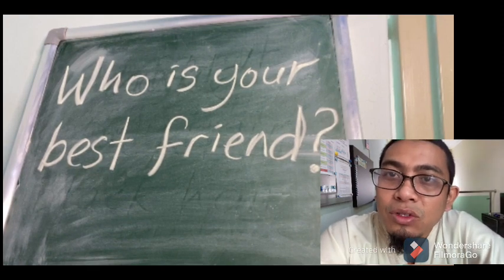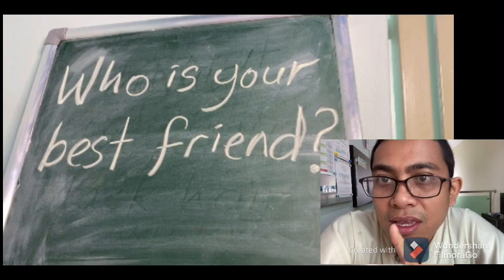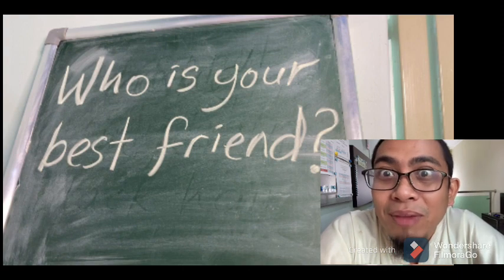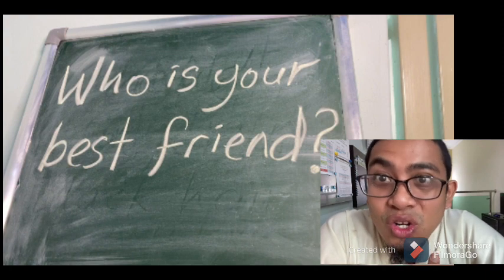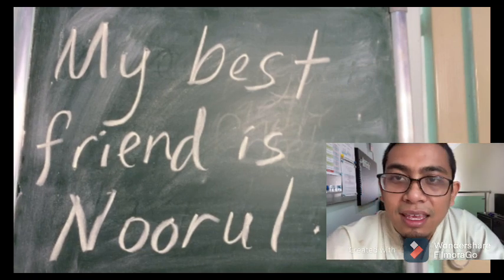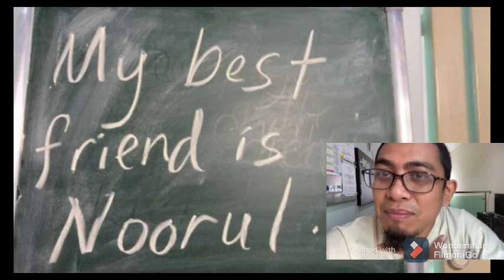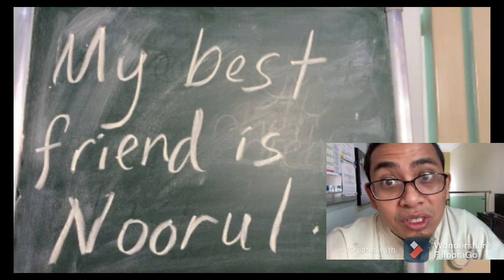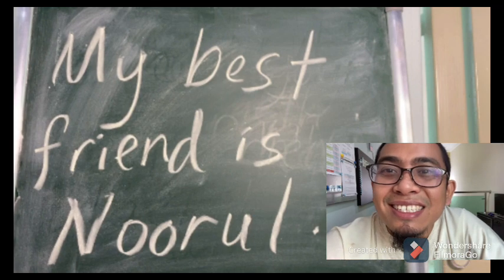Class, now I want to ask you about your best friend. In your class, there must be at least one best friend. Now I want to know who is your best friend. For example, my best friend is Norul Huda. You can say: my best friend is Norul. And who is your best friend? You can answer: my best friend is Ali.